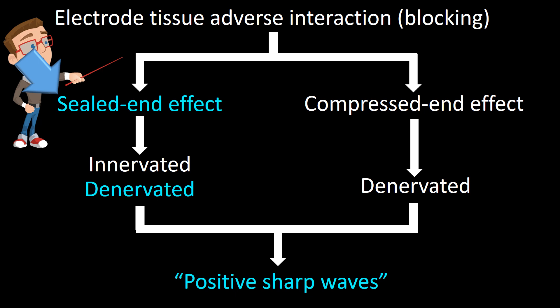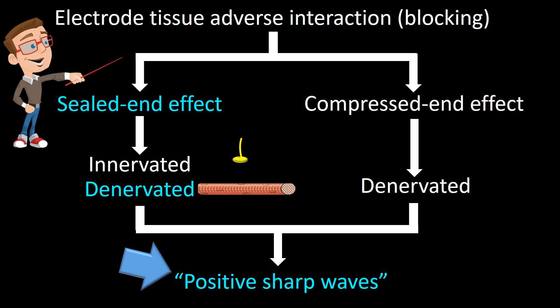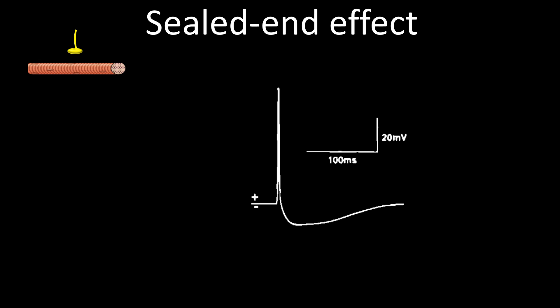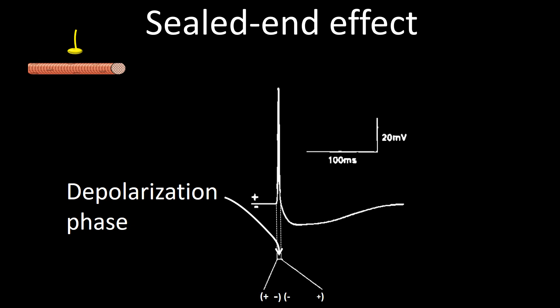Now let's look at how sealed-N effect in denervated fibers produces morphologically positive sharp waves. Here is a representation of an intracellular muscle fiber action potential in a denervated fiber. The segment between the interrupted lines is referred to as the depolarization phase. A quadrupole representation of the depolarization phase is introduced, with the signs of the leading dipole larger and closer together than those of the trailing dipole, indicating that the trailing dipole has a slower rate of voltage change per unit of time than the leading dipole.